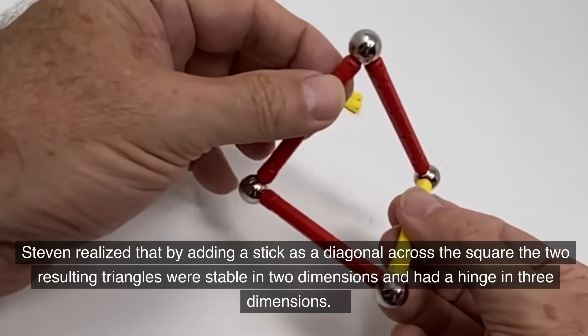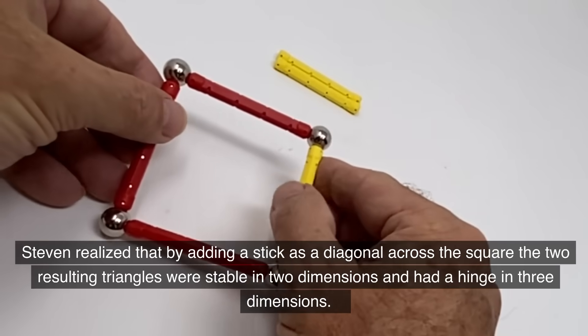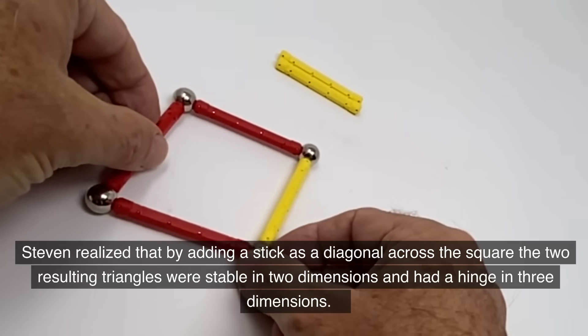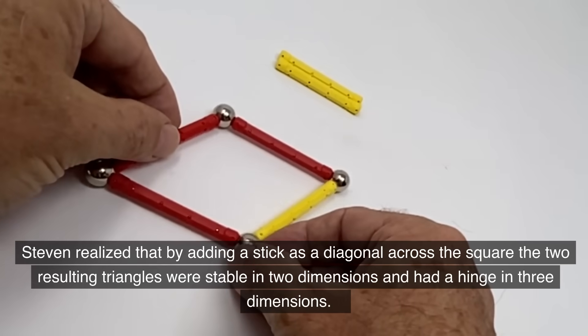Stephen realized that by adding a stick as a diagonal across the square, the two resulting triangles were stable in two dimensions and had a hinge in three dimensions.